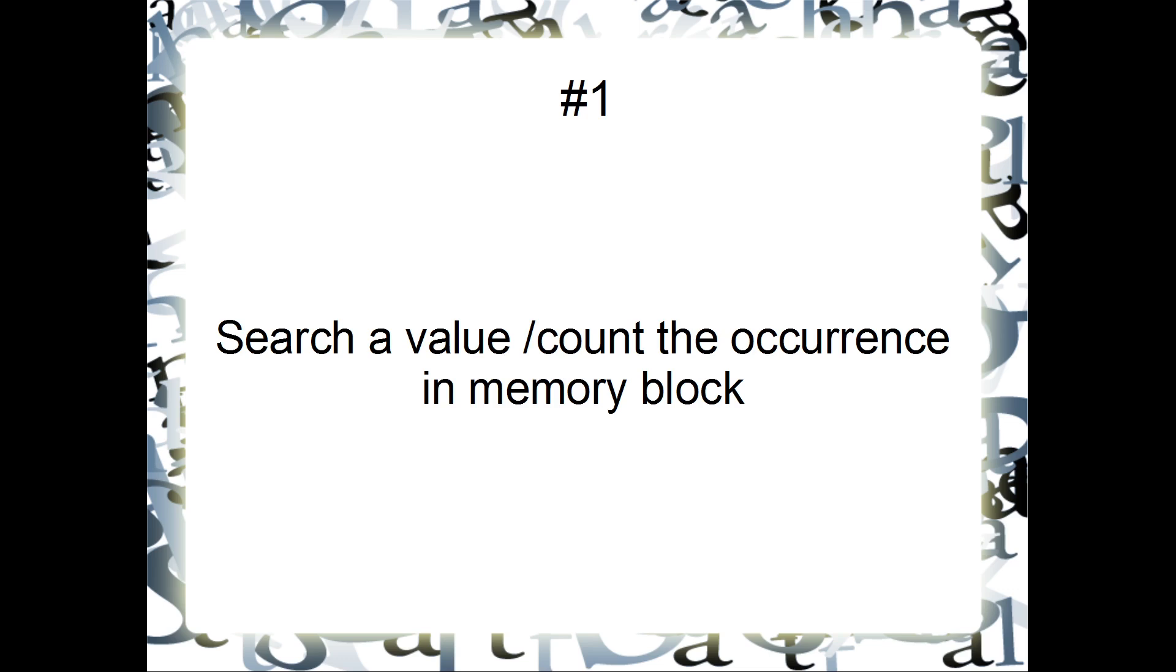The first program we discuss is search a value or its variation counts the occurrence in a memory block. So in case of search a value, you have to find particular value which will be asked in a question to search. This is a loop program where you have to loop through all the values, and when the equal value is found to the value in question, you get the answer and store that answer in a particular block.